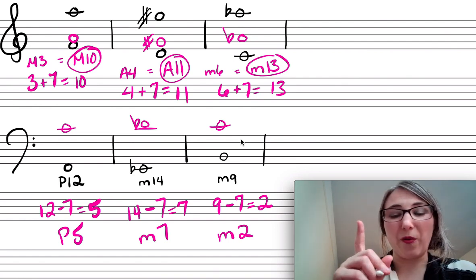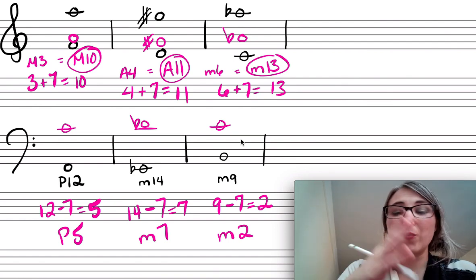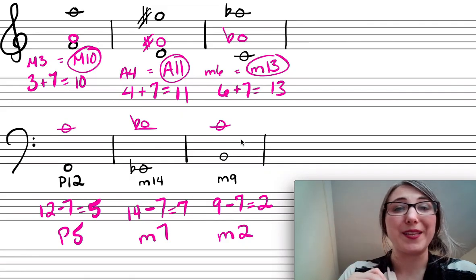So 7 is the trick, right? You're either going to add it or you're going to subtract 7. Make sure you keep the quality the same. All right.